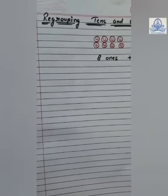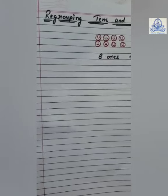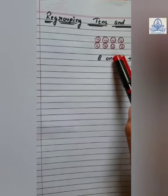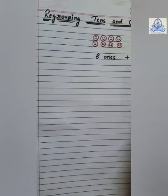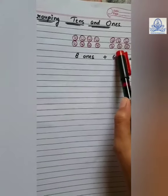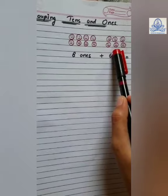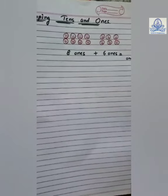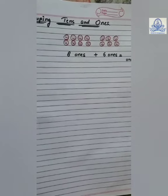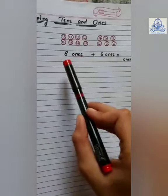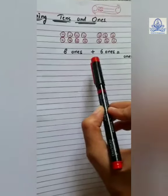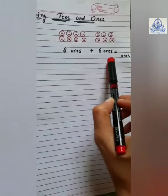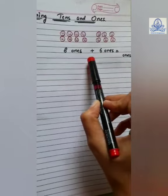Suppose there were eight children in the park and six more children join them. So, how many children are there in all? Eight children are called eight ones and six children, six ones, and we have to add them.